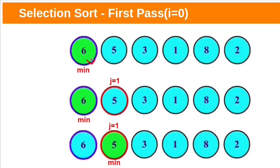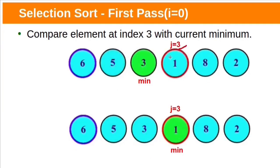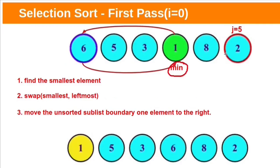Assume the first element in the unsorted subarray is the smallest element — the minimum. Now start at index 1. If the element at index 1 is smaller than the minimum, update the minimum index and make the element at index 1 as minimum. Here 5 is smaller than 6, so now minimum is updated to 5. Compare the element at index 2 — here 3 is smaller than the current minimum 5, so make 3 the minimum. Compare element at index 3 — here 1 is smaller than 3, so 1 becomes the current minimum. Element at index 4 is 8, which is not smaller than 1. Element at index 5 is 2, which is also not smaller than 1. So the smallest element is 1. We have completed the first step.